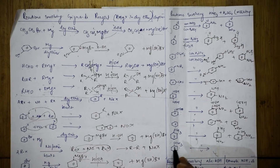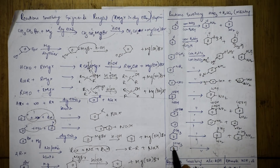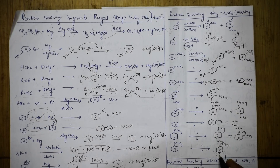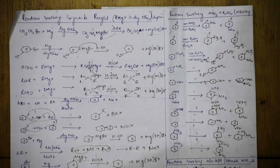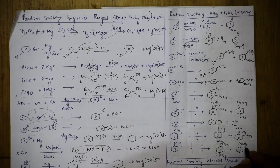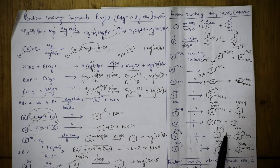Now let me see the last reaction. When I take COCH₃ - nothing to do, copy the same COCH₃. You are going to write NO₂ at the para position and NO₂ at the ortho position. That is it - simple. So the reaction of nitration is done, and the reactions of Grignard's are done.